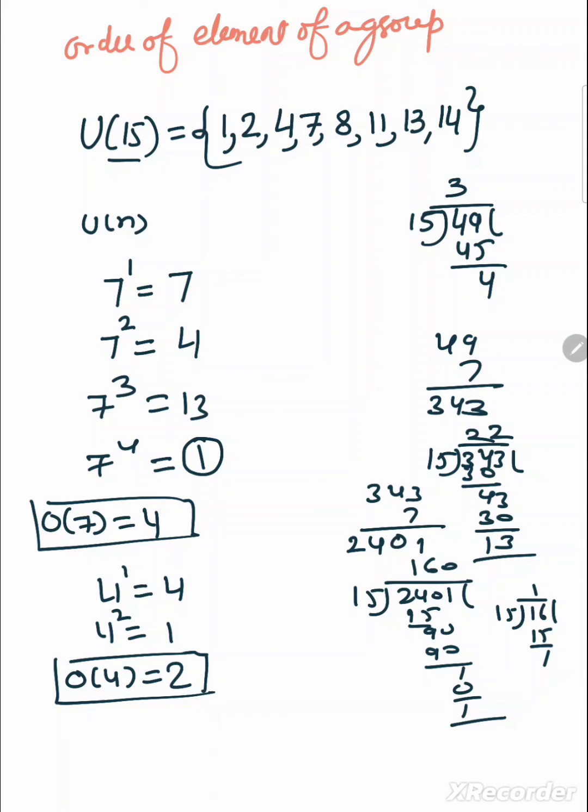Similarly we take order of 1. 1 raised to power 1 equals 1, so order of 1 is 1. Order of 2: 2 raised to power 1 equals 2. 2 raised to power 2 equals 4. 2 raised to power 3 equals 8. 2 raised to power 4 equals...